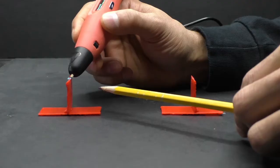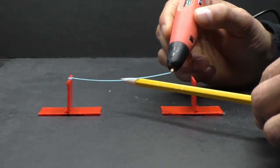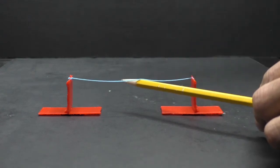If you're having trouble with sagging, you can take a pencil or a piece of cardboard to help support your lines in the center as you're making them.